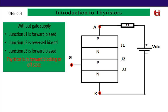Because of junction J2 being reverse biased, current will not flow from anode to cathode. The top P-layer is connected to positive supply, so holes are repelled by the positive plate and electrons are attracted toward it — making J1 forward biased. Similarly, the negative plate repels electrons in the N-layer and attracts holes from the P-layer, making J3 forward biased. At J2, electrons of the N-layer are attracted by the positive plate and holes of the P-layer are attracted by the negative plate, so J2 is reverse biased. Therefore, only a small leakage current flows — this is the thyristor off-state, or forward blocking mode.